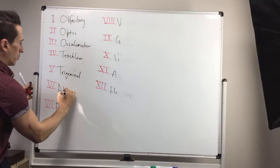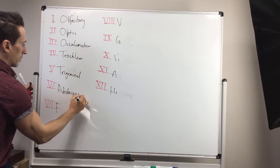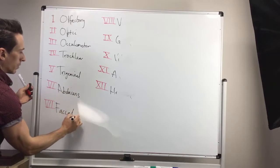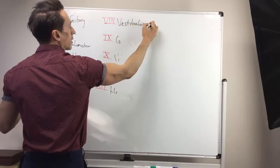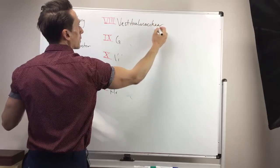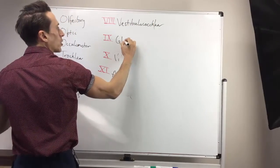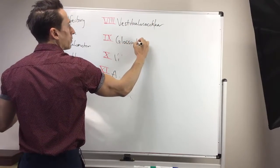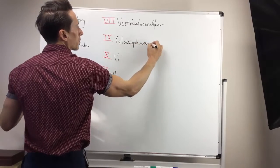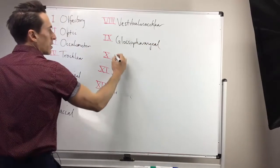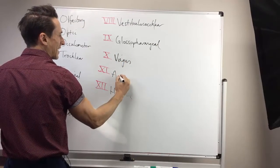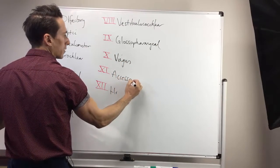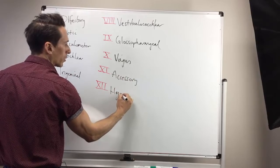then abducens, then facial, then vestibulocochlea, then glossopharyngeal, then vagus, then accessory, and then hypoglossal.